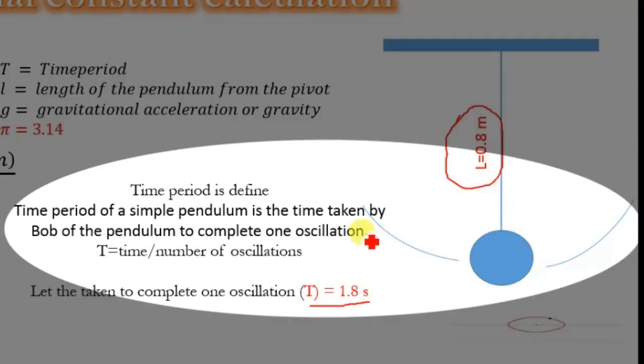One oscillation is when the object starts from an extreme position and returns back to that extreme position. This is one complete oscillation, and the time period is the time taken during this motion.